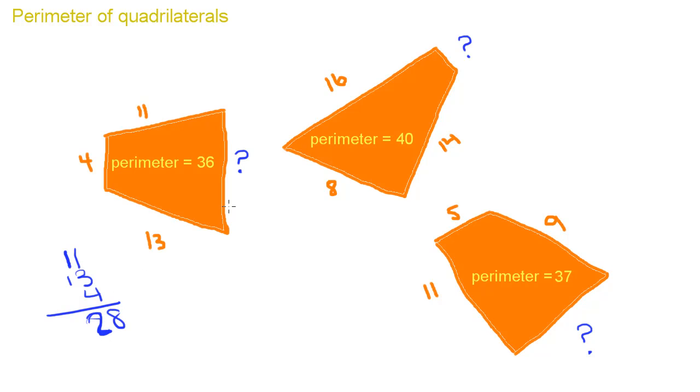Right now we have a total of 28 and we know we have to have 36. So we take 36 minus 28, borrow from the 3, 8, 0. So we know that this side is 8.